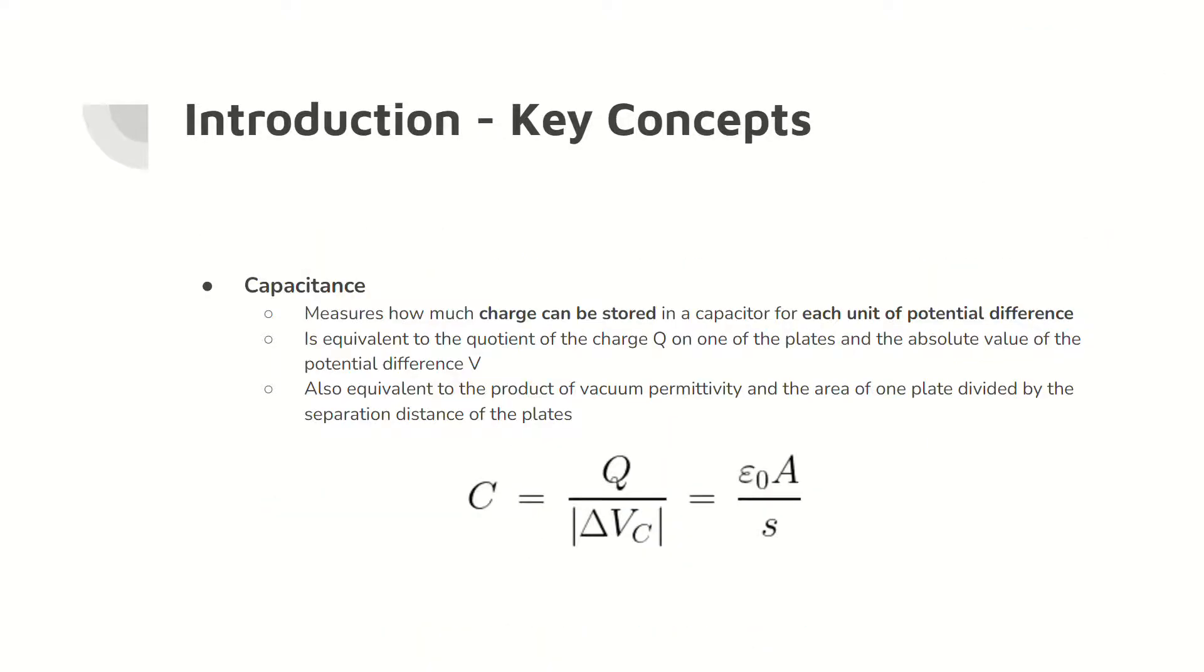Capacitance is the measure of charge that can be stored in the capacitor for each unit of potential difference. Capacitance is equal to the magnitude of the charge on one capacitor divided by the potential difference, which is equivalent to the area and the vacuum permittivity divided by the separation distance.